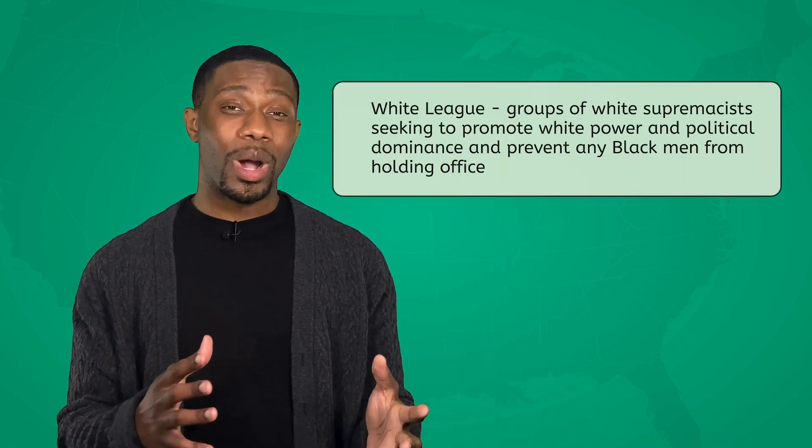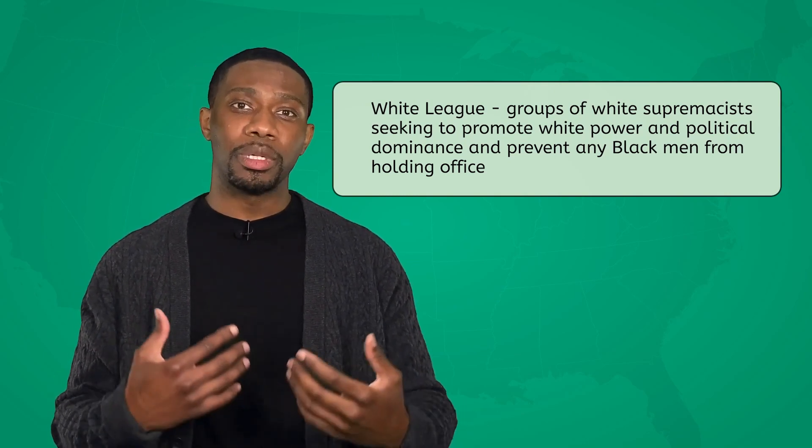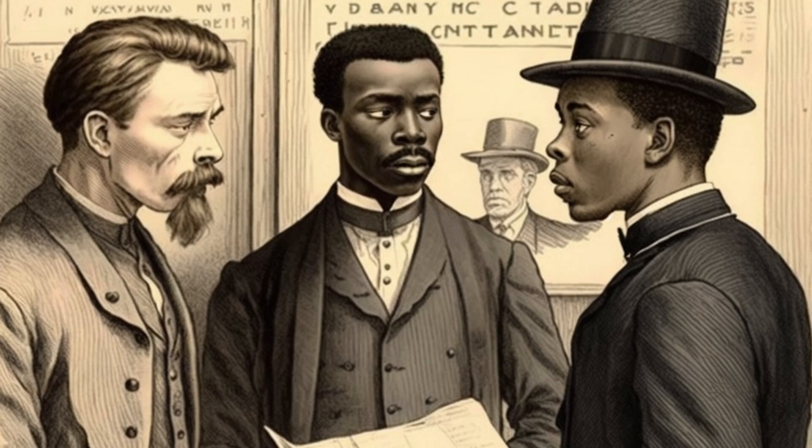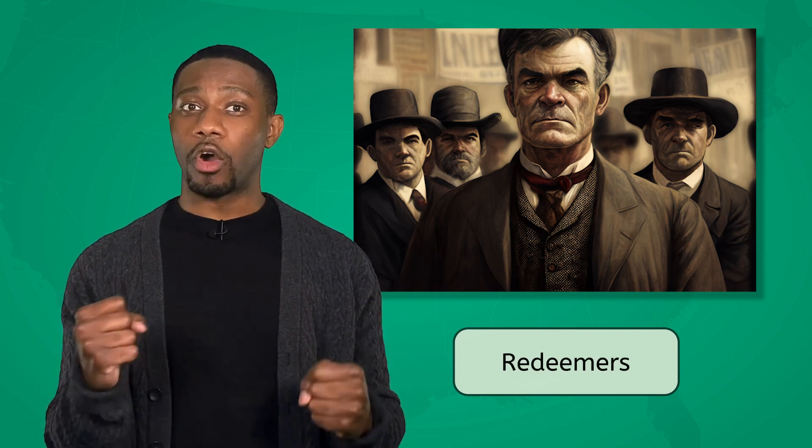With Democrats in control of the House, Reconstruction came to a screeching halt. The removal of the Army allowed Southern states to weaken civil rights for Black people, especially voting rights. White supremacists formed the White League, seeking to promote white power, establish political dominance, and prevent Black men from holding office. They monitored voters at polling stations to intimidate them, and white leaguers often attacked people they saw casting ballots for Republican candidates. White supremacist tactics prevented many Black people from voting and pushed white voters to support Democrats who opposed Reconstruction. Confederate politicians and military leaders, grossly referring to themselves as redeemers, ran for office in the South. They wanted to reinforce white control and solidify the power of wealthy plantation owners, maintaining a society and economy similar to the pre-war era.